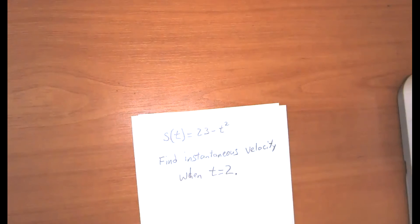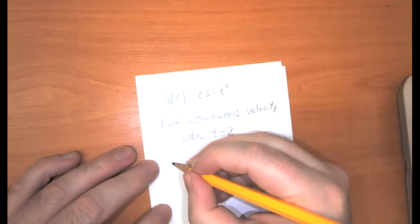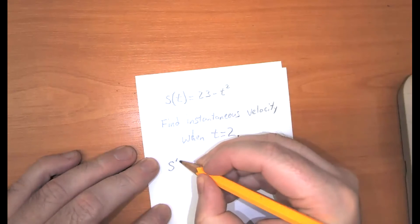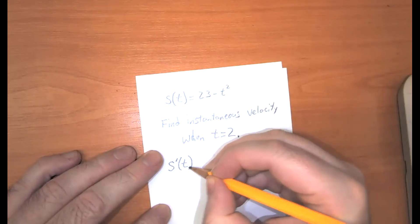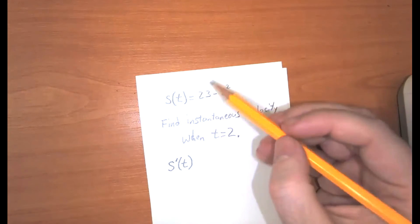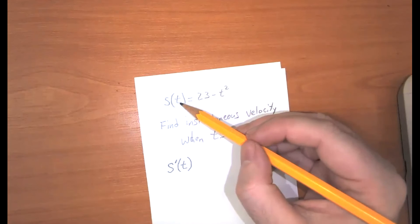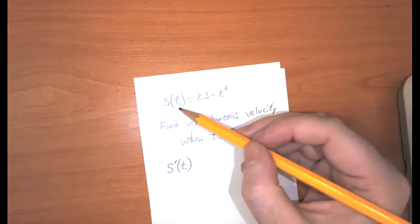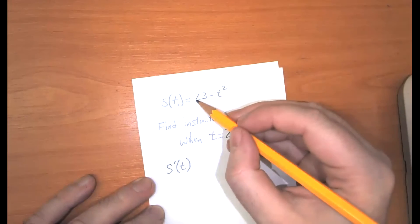Whenever we talk about slope or instantaneous rate of change, I want poof derivative to pop into your mind. Because that's going to be the way that we solve that problem. All right, and so heading off to the document camera. So we've got s(t) is equal to 23 minus t squared. We want to find the instantaneous velocity when t is equal to 2. So the first thing we're going to do is define the instantaneous velocity. That is the derivative of the displacement function. So s'(t). One thing you'll see, I should mention just as an aside, is that when you see physics formulas, usually t will wind up being our independent variable instead of x because t stands for time.